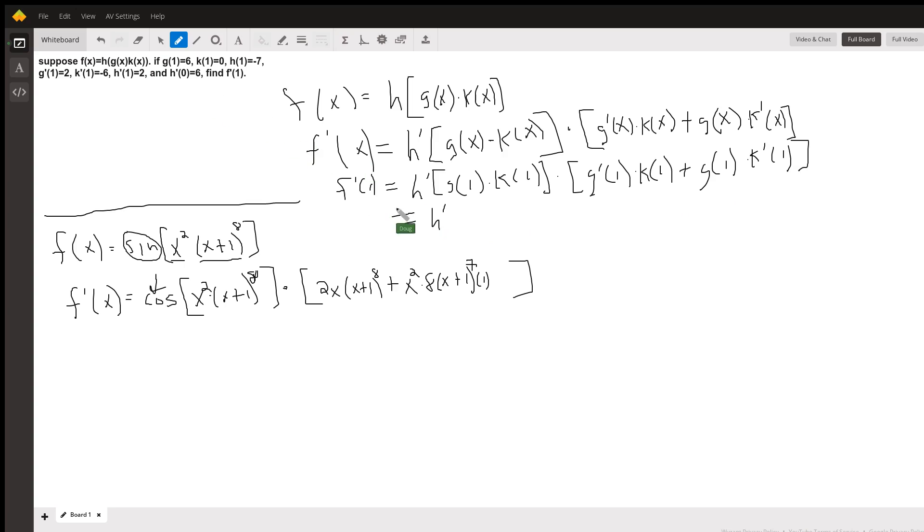g of 1 is 6, k of 1 is 0, g prime of 1 is 2, k of 1 is 0.